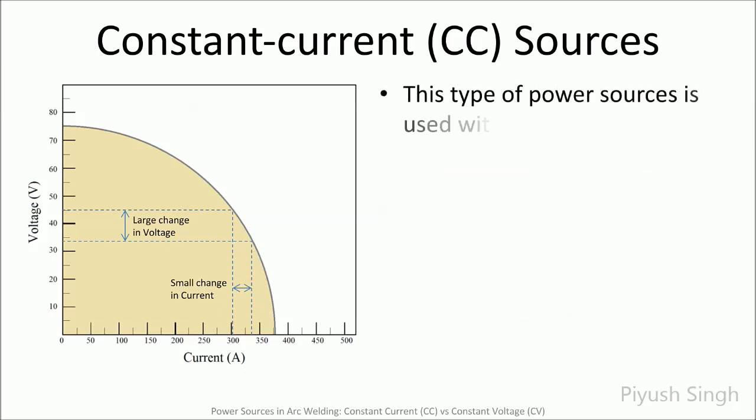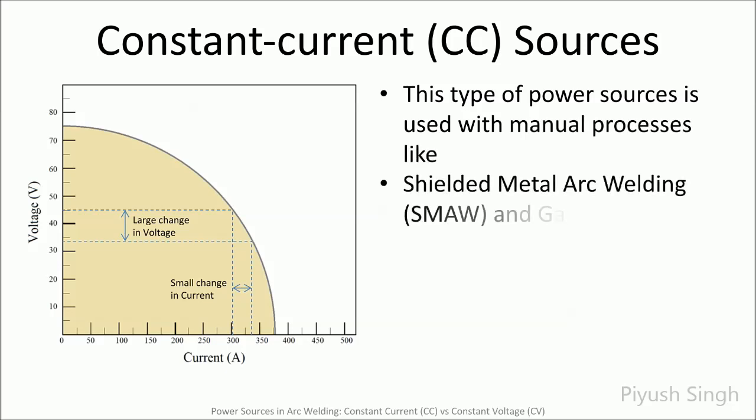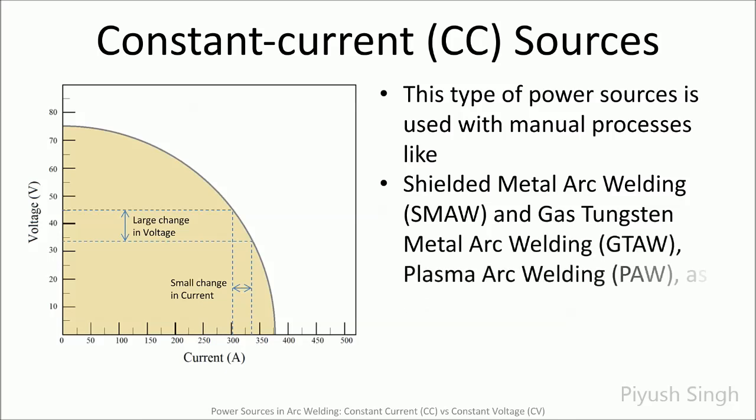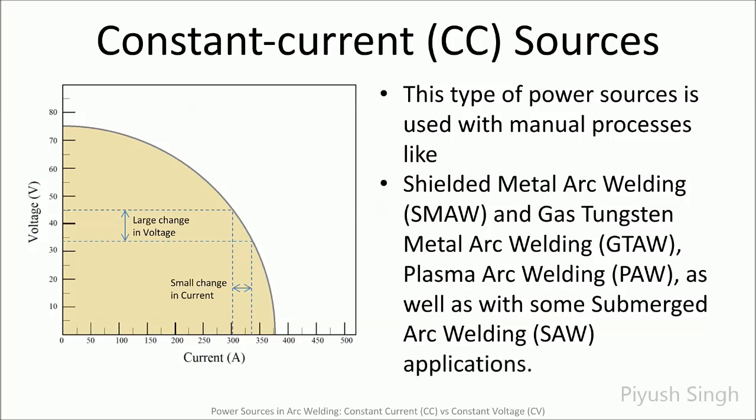With manual processes like shielded metal arc welding and gas tungsten arc welding, we are controlling all variables by hand. It is necessary to have the electrode melt at a consistent rate so that the welder can feed it into the joint at a consistent rate. The welding output needs to maintain current at a constant level so that the resulting melt-off rate is consistent. Voltage is a less controlling variable. With manual processes, it is very difficult to consistently maintain the same arc length, as we are constantly feeding the electrode into the joint. With constant current output, current is the preset on the machine, and voltage is simply measured as an average value while welding.